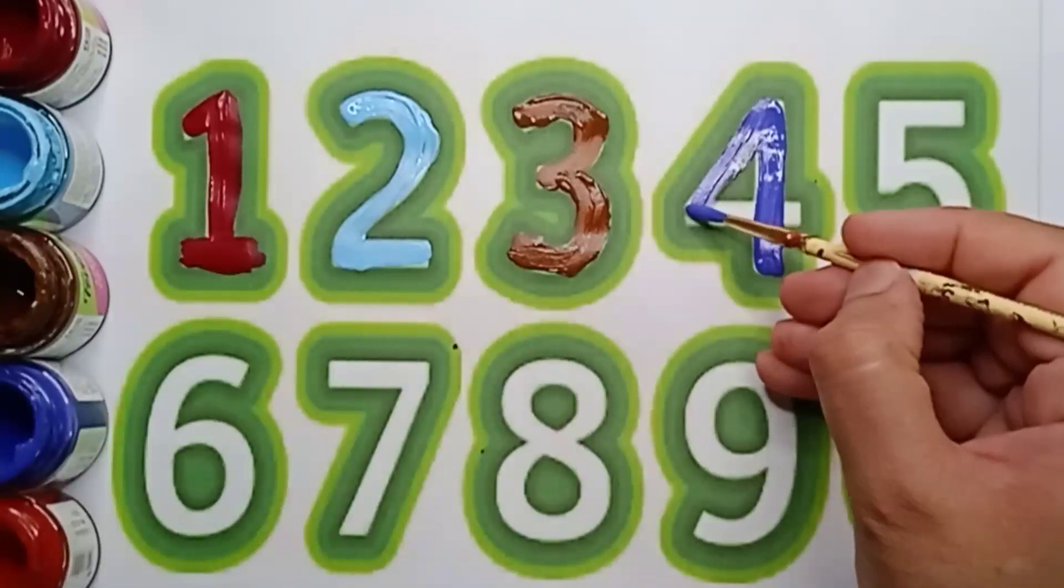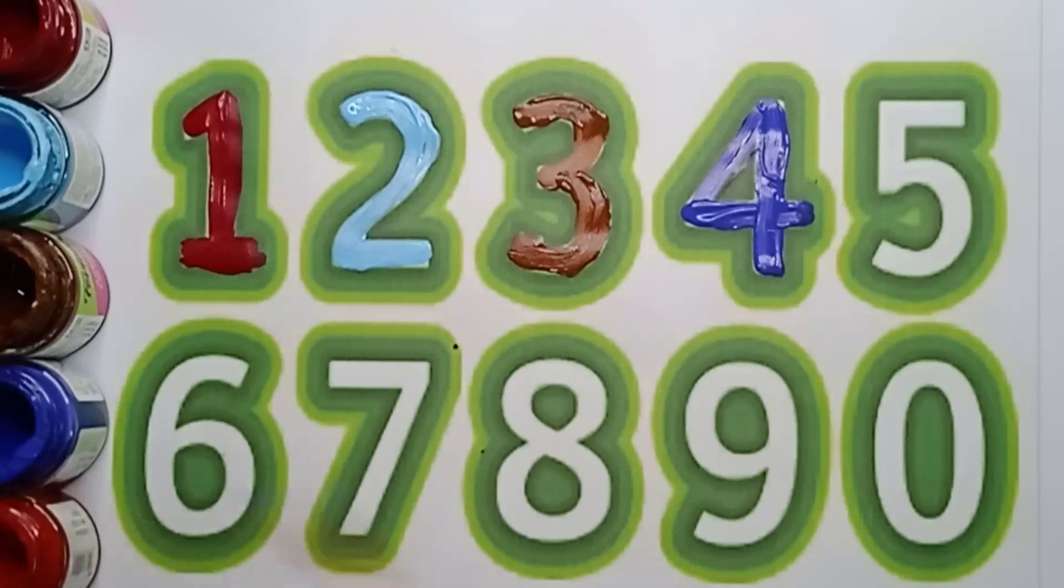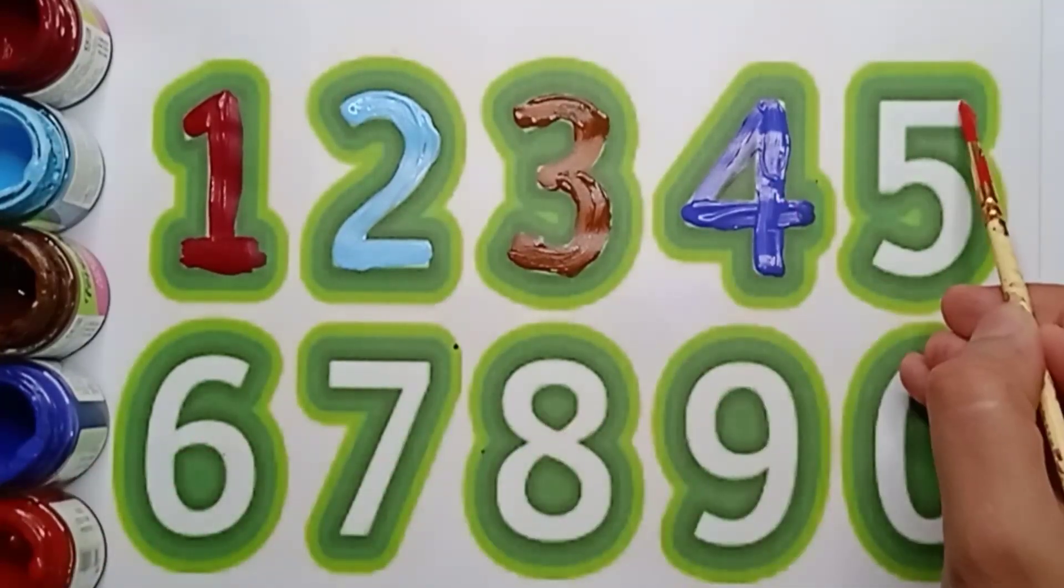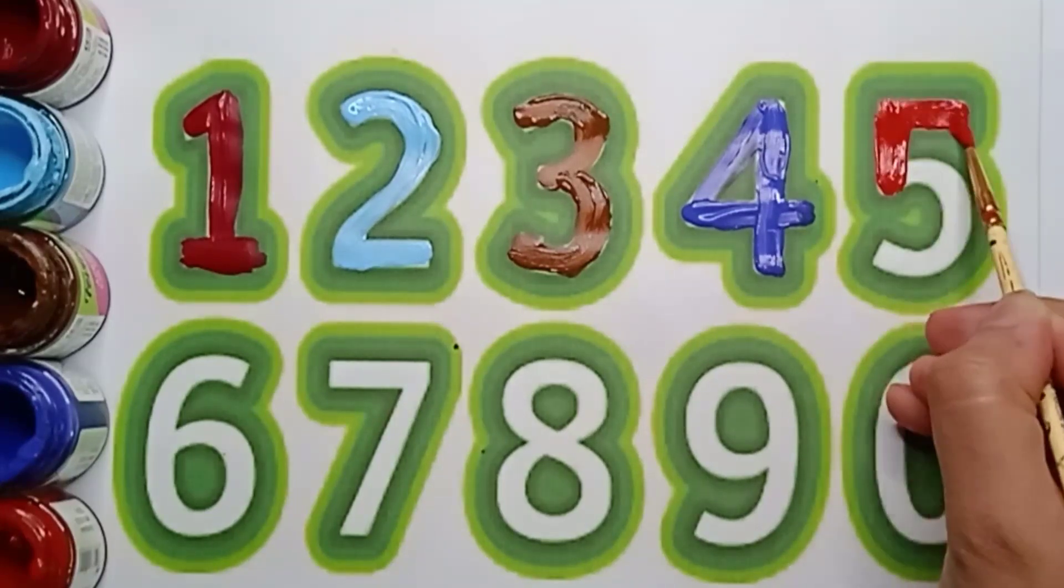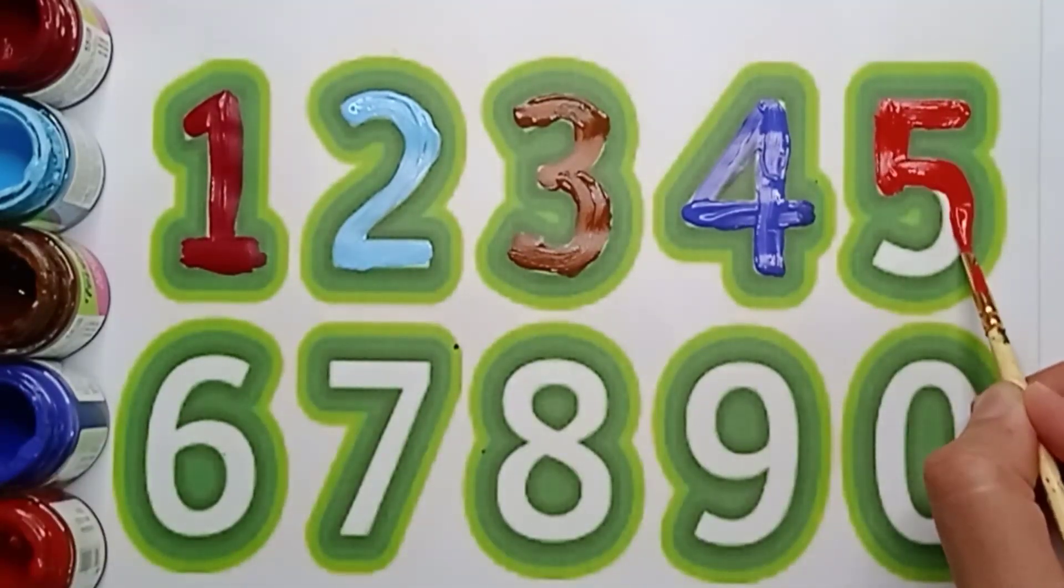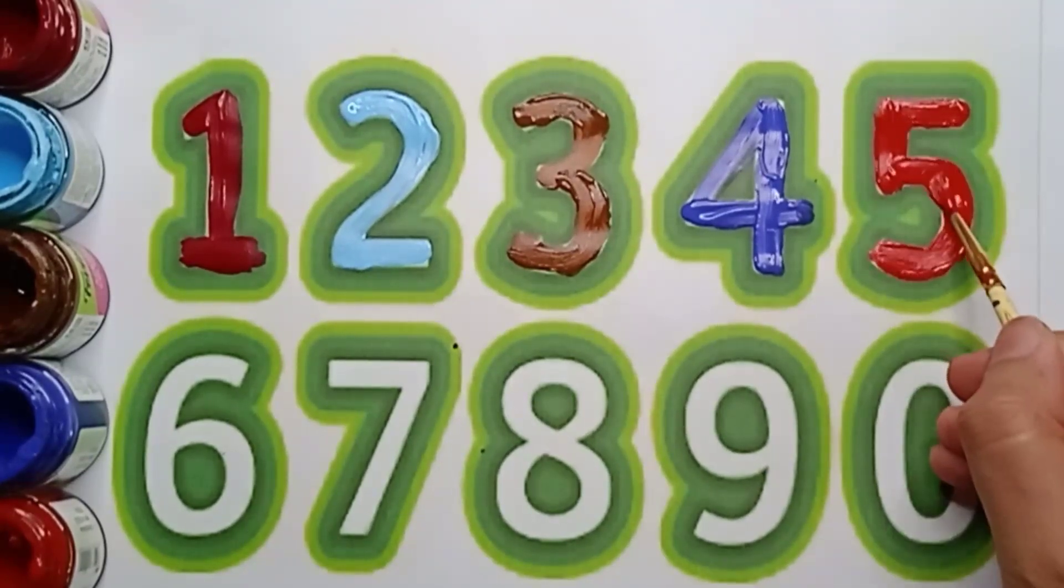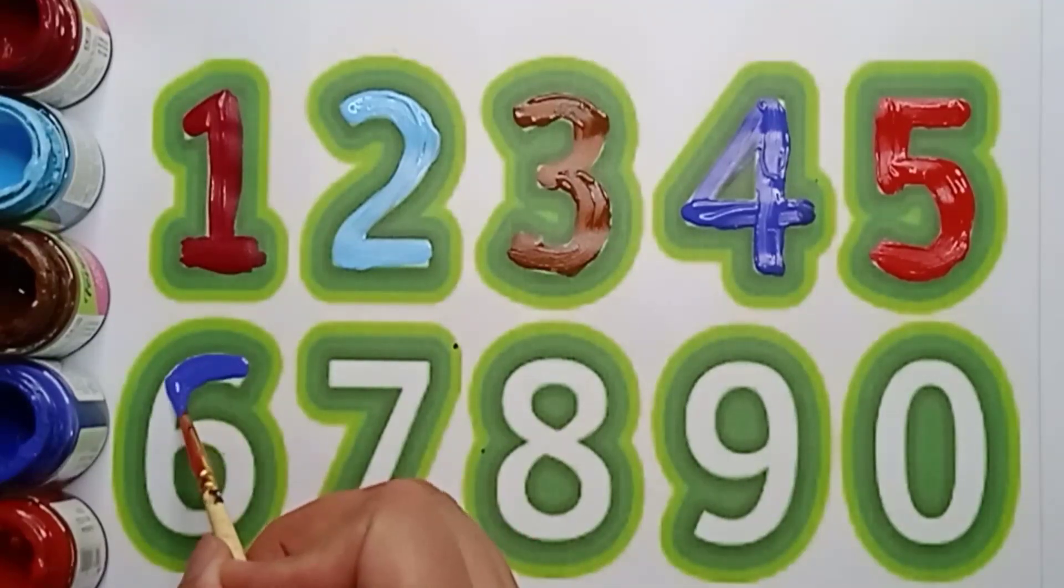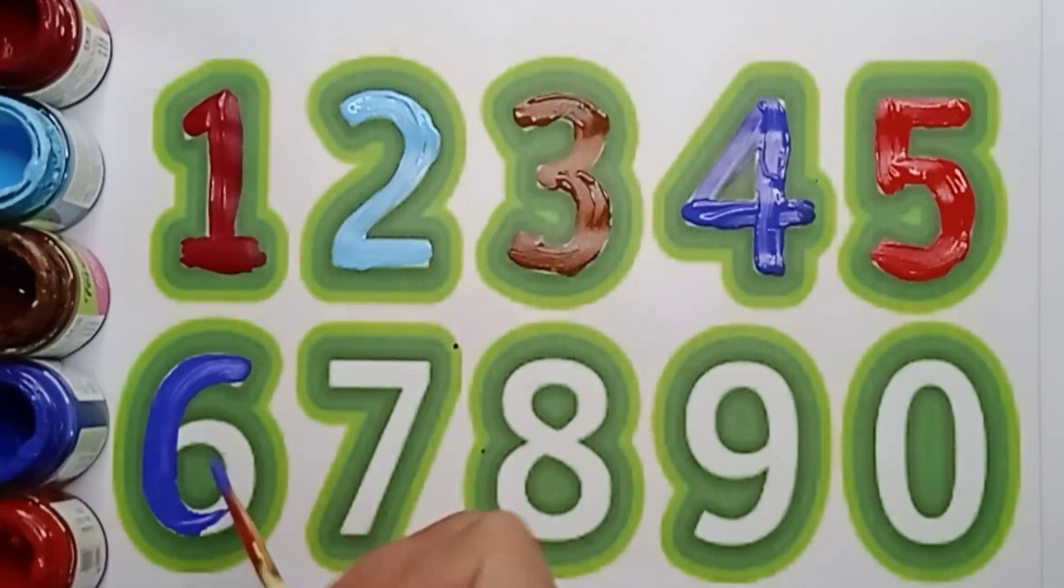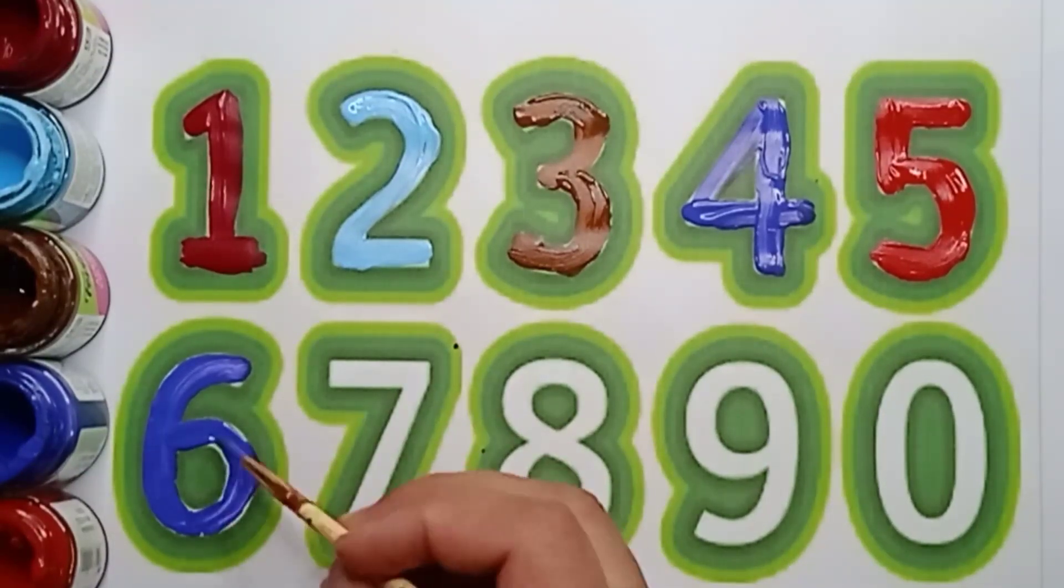four. F-O-U-R, four. Next number is five. So red color, five. See red color, five. F-I-V-E, five. Next number is six. So violet color, six. S-I-X, six.